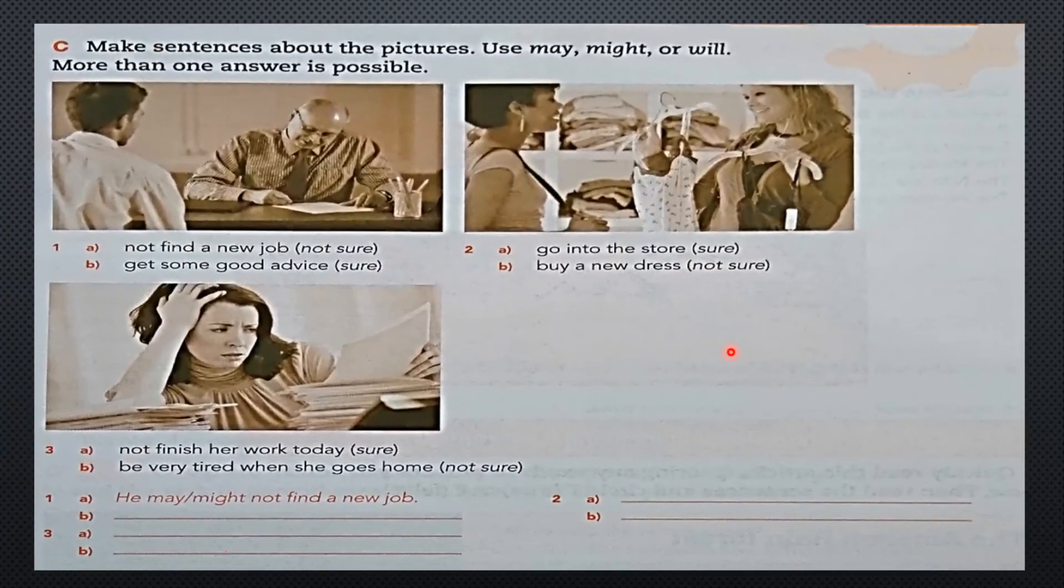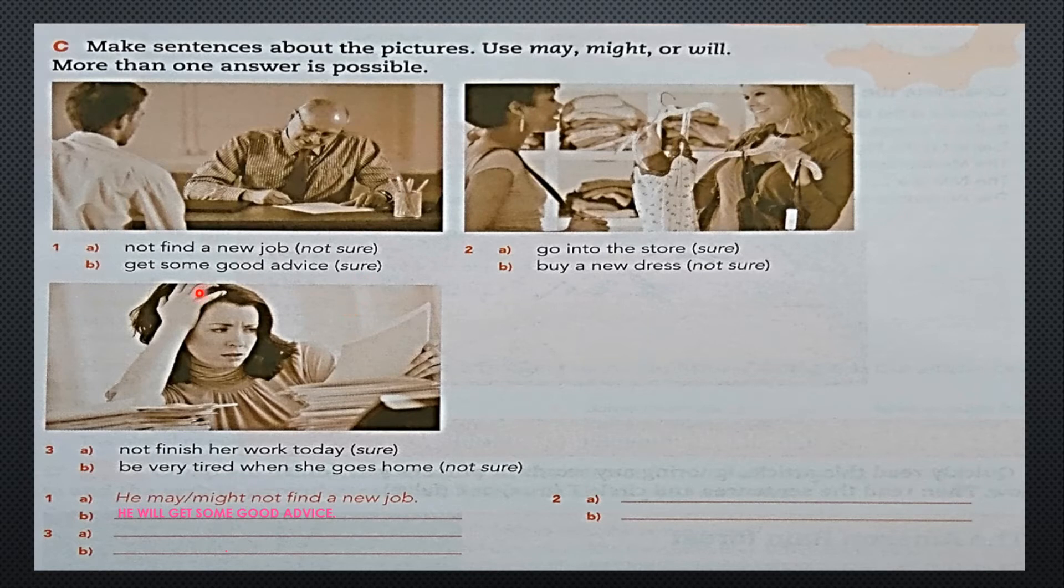Let's continue. In this part it says: make sentences about the pictures. Use may, might, or will. More than one answer is possible. In this case we have three kinds of pictures, and in these pictures we have to use the correct word. For example, number one: not find a new job, but in that case it's not sure. In part B: get some good advice. In that case it's sure. We're going to use the correct word for each one of them. Remember, when it's not sure, we use may or might. In number one, as an example of A: He may or might not find a new job. What happened with sure? With sure we use will. Here we work with the pronoun he because we're talking about him: He will get some good advice. Why did we use will? Because we see here it says sure, that he's certain.